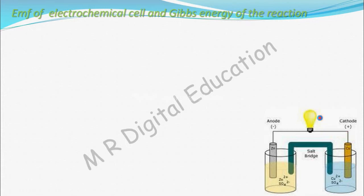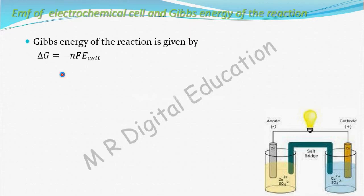So this Gibbs energy of the reaction is given by delta G, that is change in Gibbs energy, equal to minus nF times E cell. This is the relation between delta G and E cell. E cell is EMF of cell.